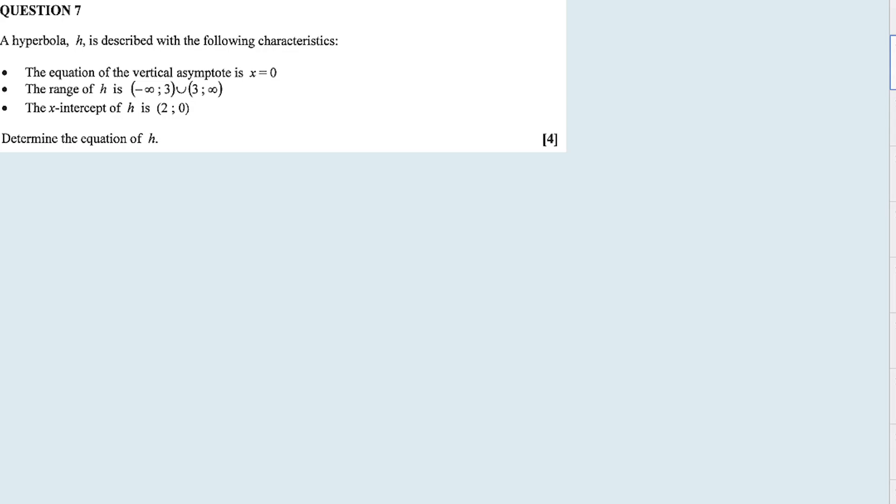Now, question 7. A hyperbola h is described with the following characteristics. The equation of the vertical asymptote is x equal to 0. The range of h is minus infinity to 3 and 3 to positive infinity. The x-intercept of h is 2 and 0. Determine the equation of h.